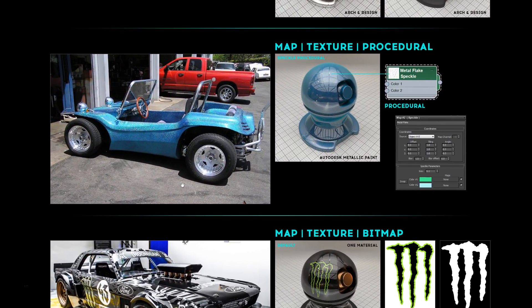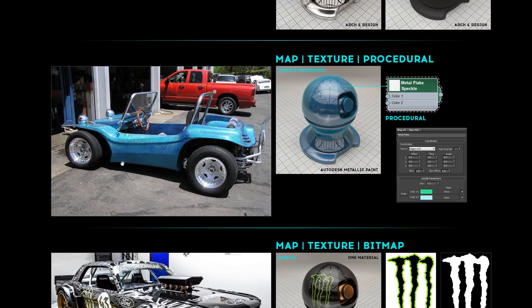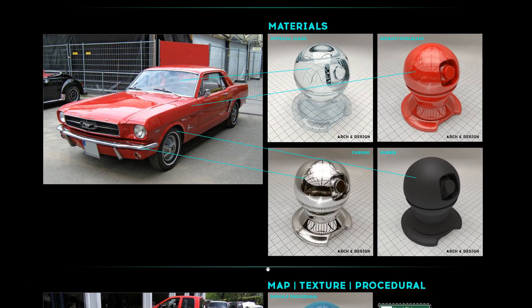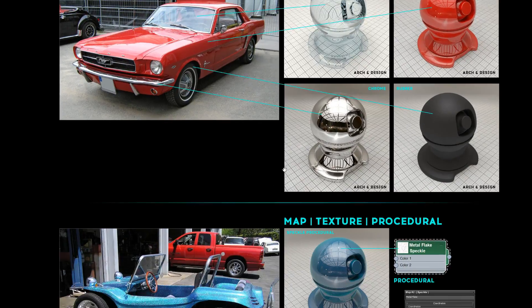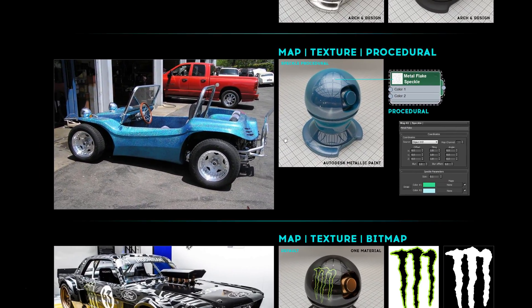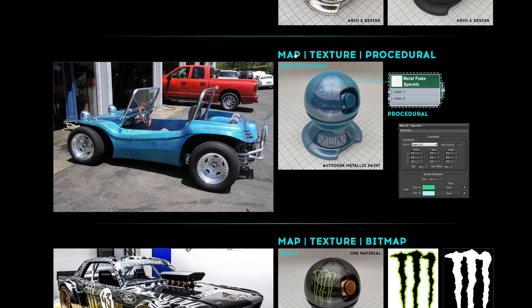The next element is what's called a map. A map is something we plug into the material. The material alone can't really generate a pattern — it can give attributes to the shader like a solid color, but you can't add a pattern with the material alone. So when we want to add patterns, we plug in a map. The official technical term is 'map,' though many people call it adding a texture.